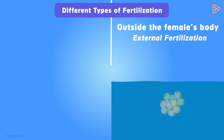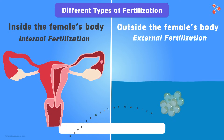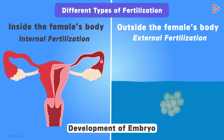This is how fertilization takes place in animals. Now the most important thing we need to know is how the embryo develops. Do watch our next video to know this important process.